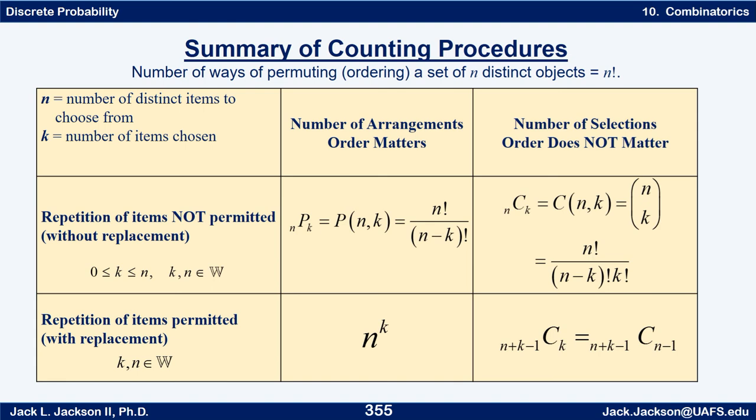But then we have two criteria. We either have the number of arrangements where the order matters or the number of selections where the order does not matter. We either have repetition of items is not permitted, sometimes called without replacement, and we also have repetition of items is permitted, or sometimes called with replacement.